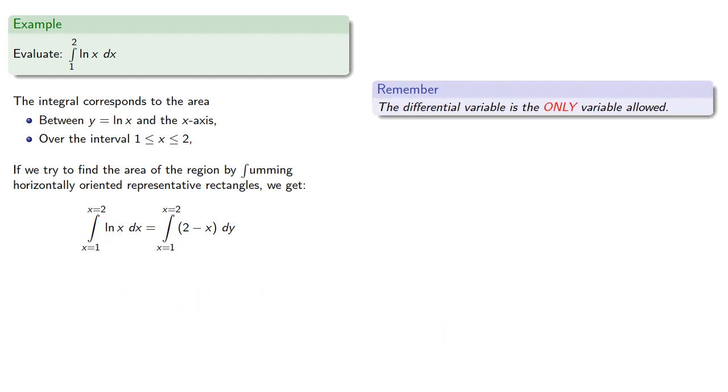So remember the differential variable is the only variable allowed. Since our differential is dy, then everything has to be rewritten in terms of y. Since y equals log x, then x equals e to the y. We also have these limits x equals 1 to x equals 2, and those also have to be rewritten in terms of y.